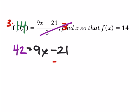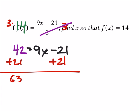So I want my x's all on the same side of the equal sign. I'll add 21 to both sides. And I've got 63 equals 9x. Divide both sides by 9, and we find that x is 7.